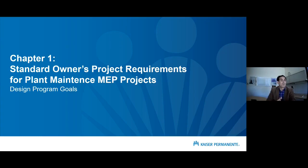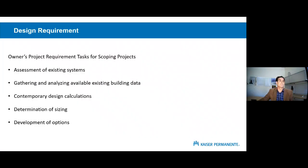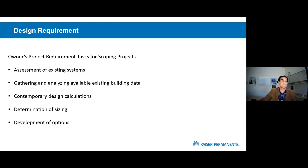In chapter one, in 2022 we're going to see some new language in the Kaiser OPR and the RFP for plant maintenance work. In this section I'm going to review that new language. The main bullet points are assessments, data gathering and analysis, contemporary calculations, sizing, and options development.